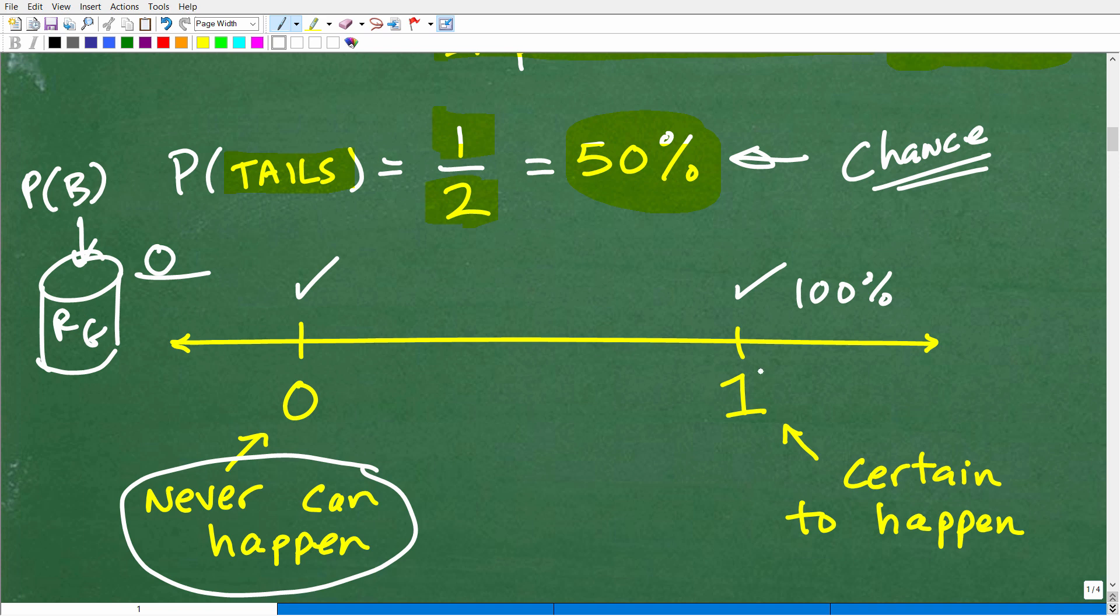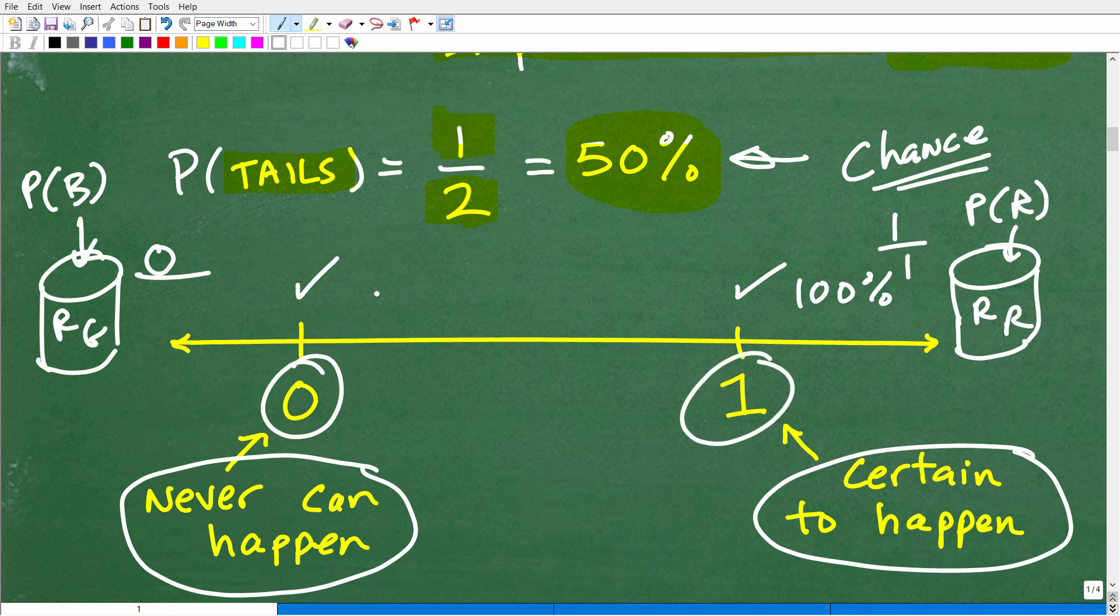Now, on the opposite end of the spectrum, if we get a probability of 1, that means it's absolutely certain to happen. So, for example, let's use our jar again. And let's say the jar has just red marbles in it. And I said, what's the probability of pulling a red marble out? Well, it's 100%, right? You're going to always pull out a red marble. So, this is a basic concept of probability. It's 0 to 1, but typically, we like to express probability as a percentage.